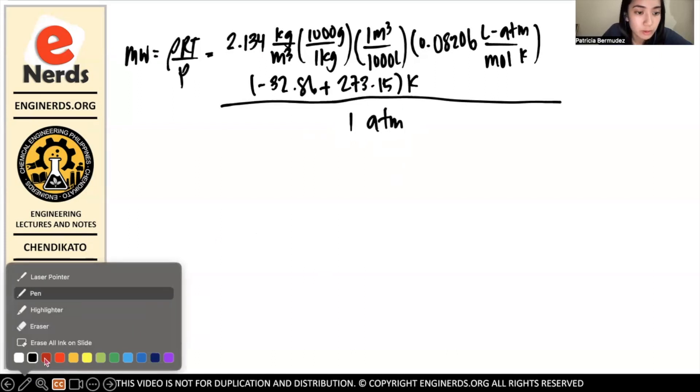So we're going to do some unit cancellations here. Kilogram cancels, meter cube cancels, liters cancel here, and then the atm. Since this one is in the numerator and this one is in the denominator, you can cancel that. And then the Kelvin here cancels. So what remains is per mole here and grams. So that's the unit of molecular weight of the compound.